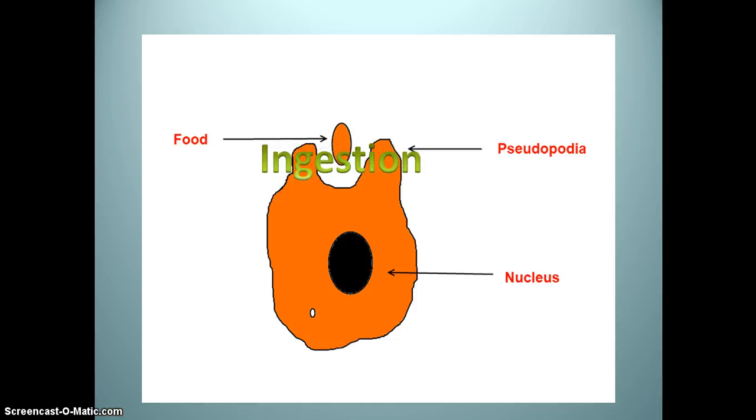Ingestion. Amoeba has no mouth or a fixed place for the ingestion of food. Amoeba ingests food by using pseudopodia. When a food particle comes near amoeba, an amoeba ingests this food particle by forming temporary finger-like projections or pseudopodia around it.